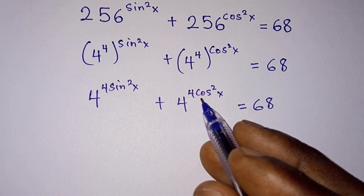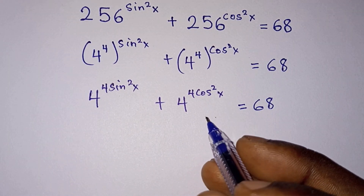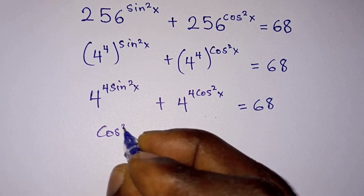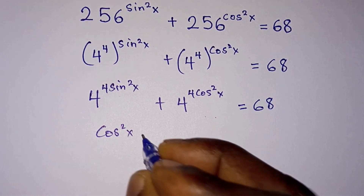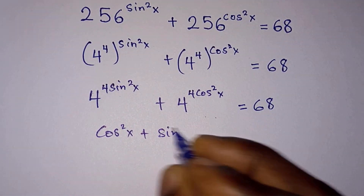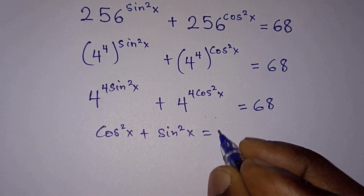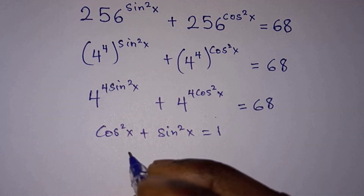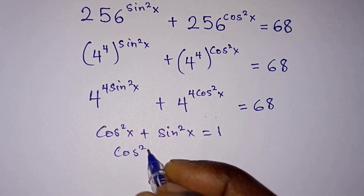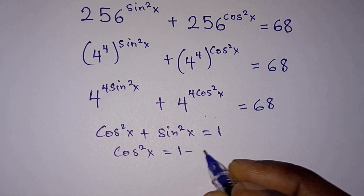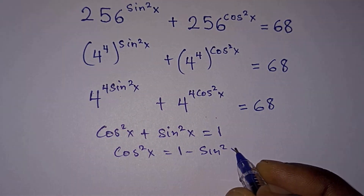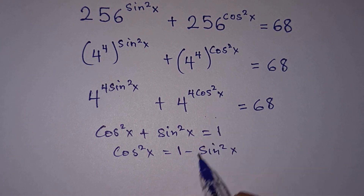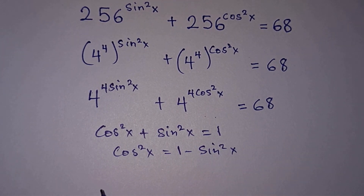Let's change cosine squared x to sine squared x by using the Pythagorean identity: cosine squared x plus sine squared x equals 1. Making cosine squared x the subject gives cosine squared x equals 1 minus sine squared x. We'll replace cosine squared x with this expression.